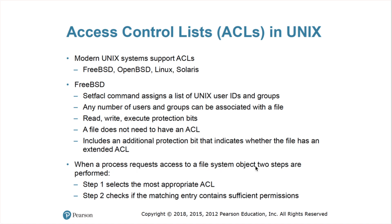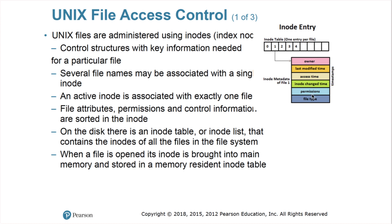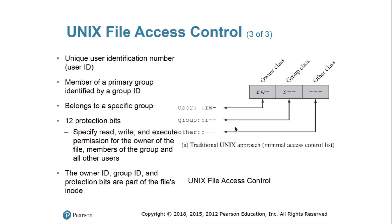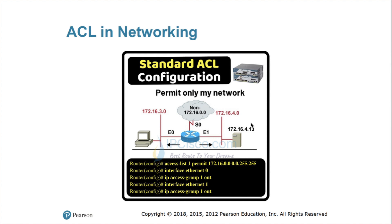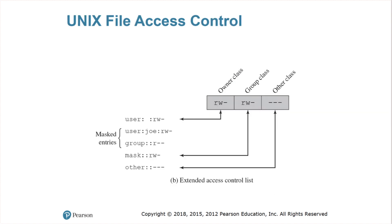When a process requests access to a file system object, two steps are performed: first, select the most appropriate level of the ACL; second, check if the matching entry contains sufficient permissions. In UNIX these are just two simple steps. You have the permissions in the inode — what type of permission, given by these bits: user, group, and others. For a regular file, R means read the content of the file, W means change the content of the file, and X means execute the file as a process.